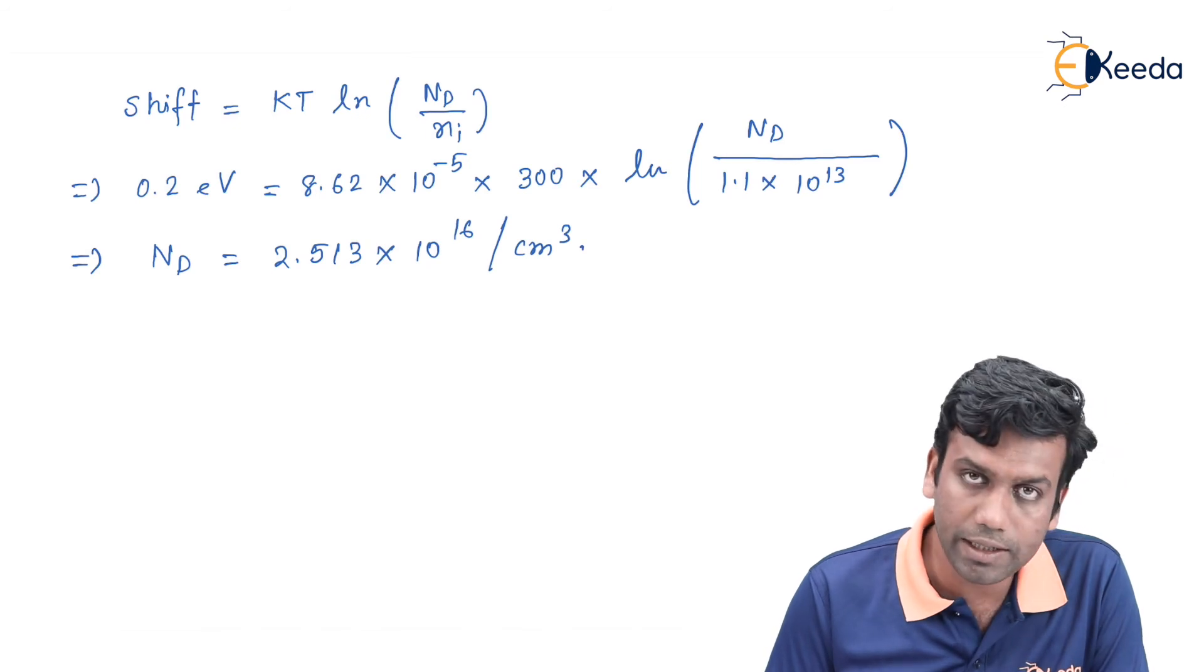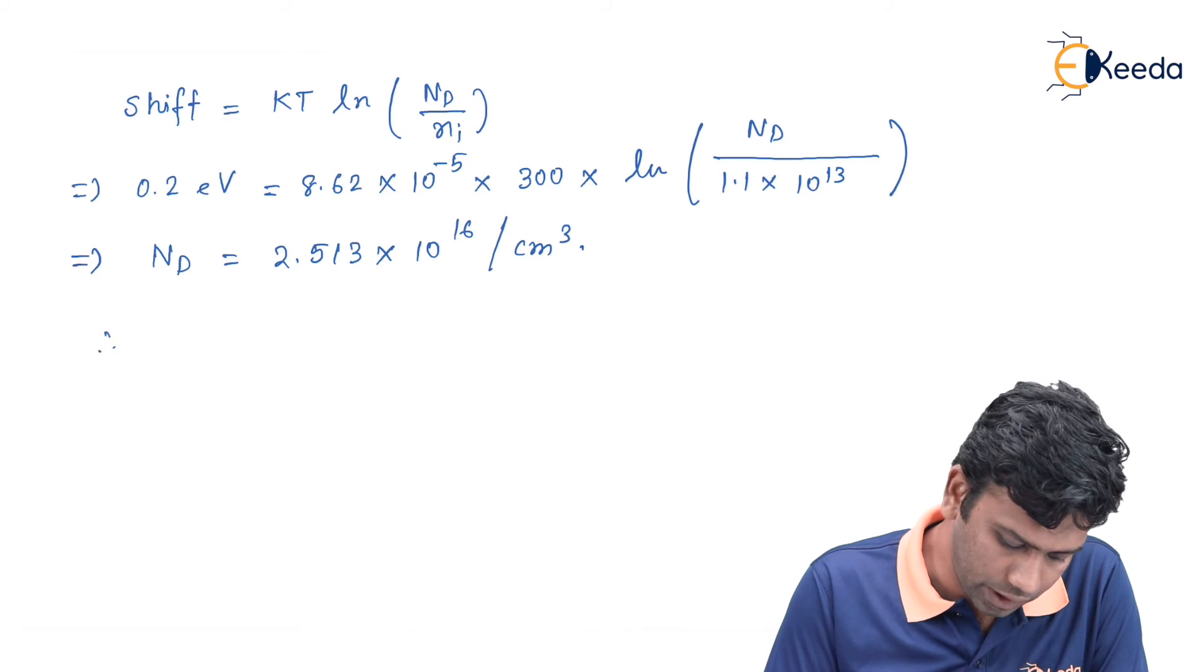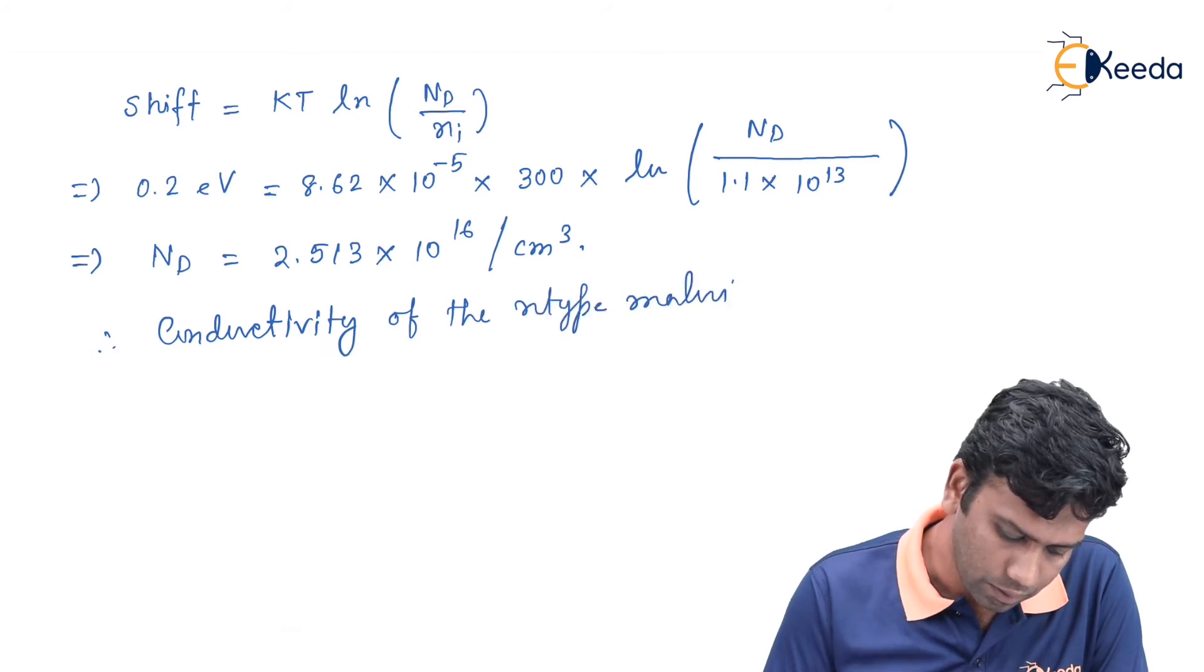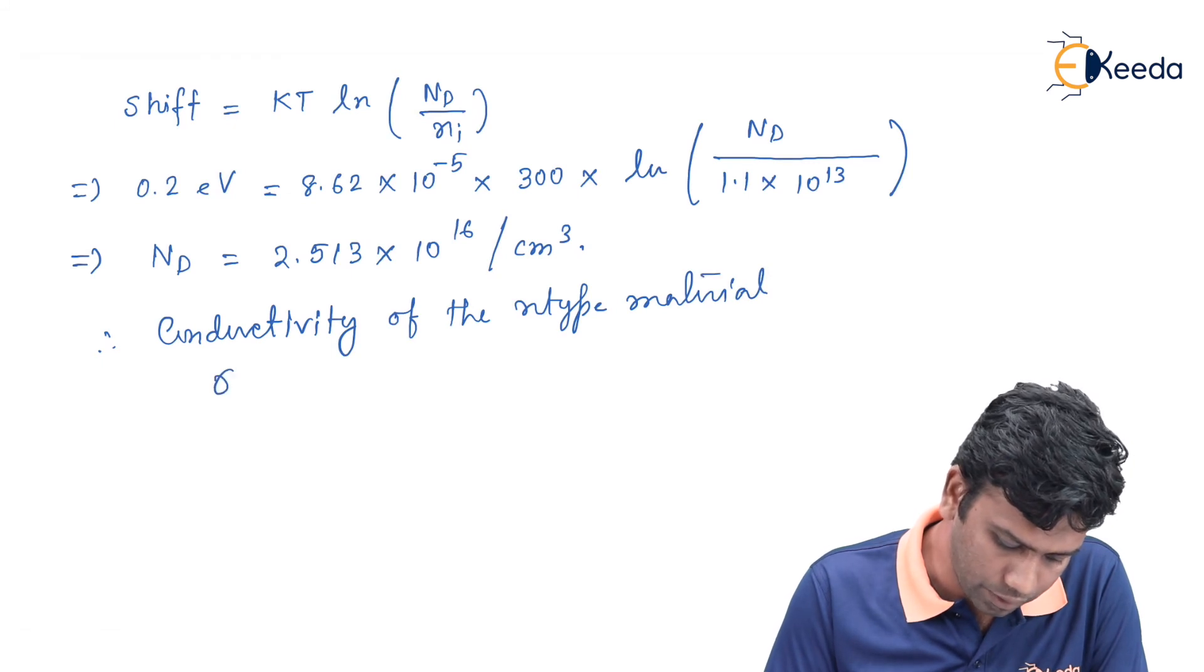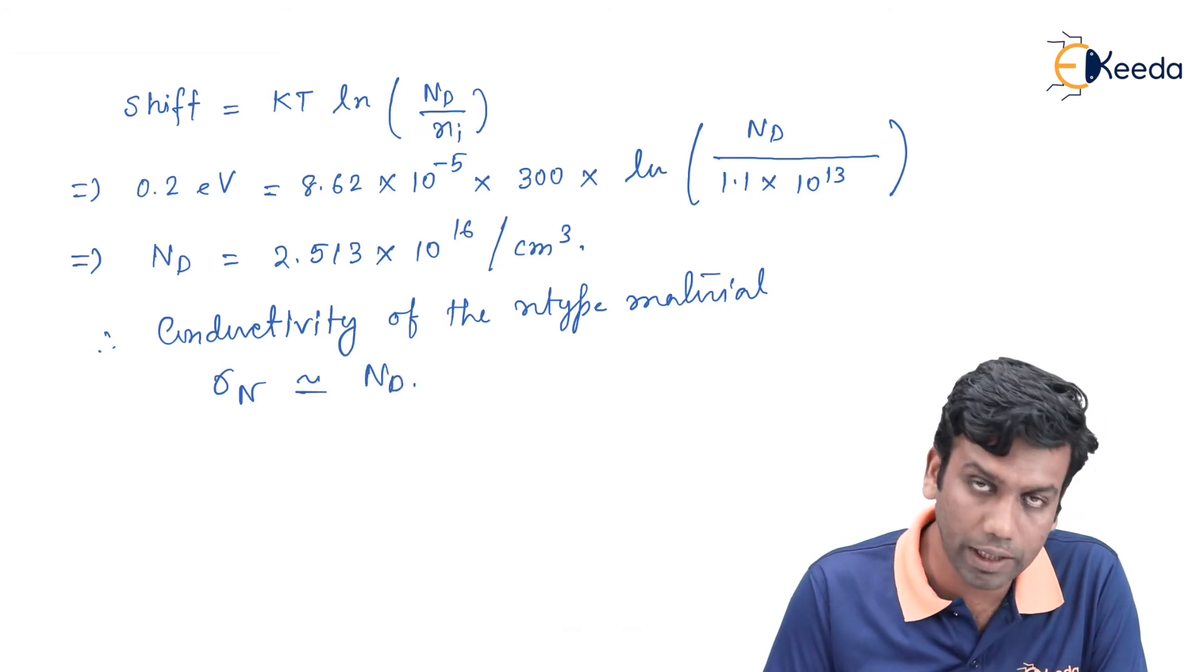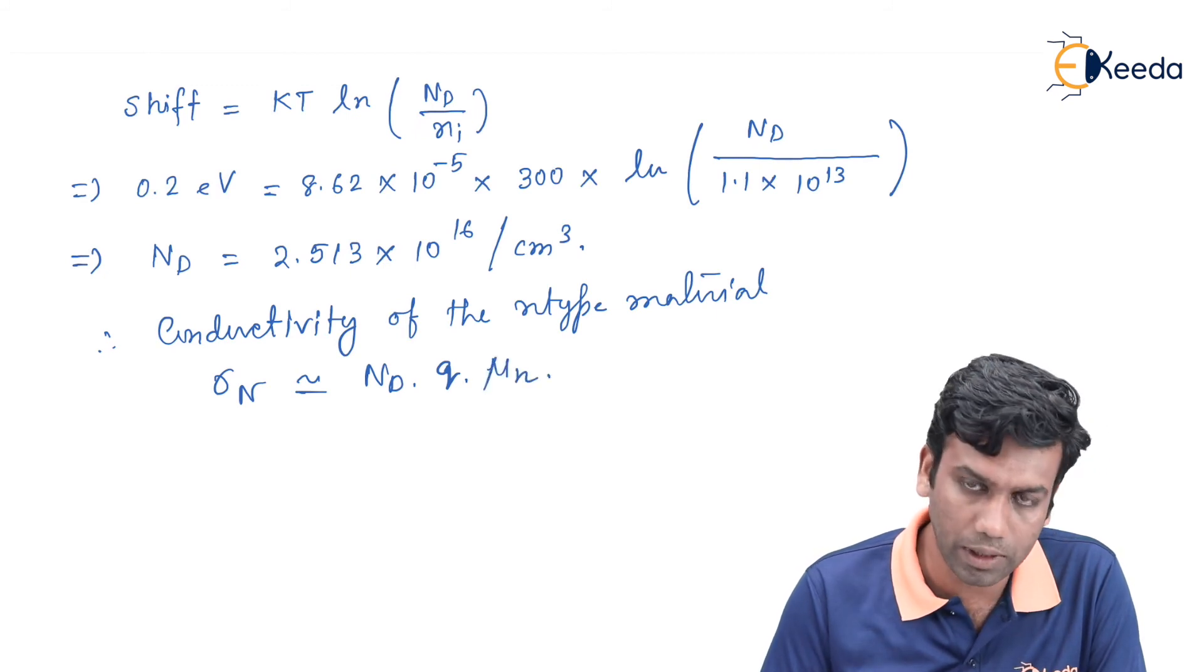Since it is an n-type semiconductor, we can say that the conductivity of the n-type material will be sigma n, which will be equals to Nd, that is the donor concentration, into q, that is the electronic charge, and mu n, the mobility of the electrons.